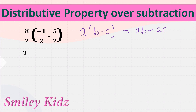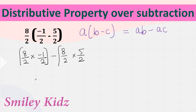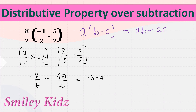This equals 8/2 multiplied by (−1/2) minus 8/2 multiplied by 5/2. Solving the brackets first: this equals −8/4 minus 40/4. So we have −8 minus 40 over 4. We have the same signs so we add and put the bigger number's sign, which equals −48/4. We can further simplify: 4 times 12 equals 48, so the answer is −12.